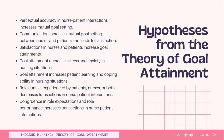Imogen King also created hypotheses from her theory: perceptual accuracy in nurse-patient interactions increases mutual goal setting. Communication increases mutual goal setting between nurses and patients and leads to satisfaction. Satisfaction in nurses and patients increases goal attainment. Goal attainment decreases stress and anxiety in nursing situations. Goal attainment increases patient learning and coping ability in nursing situations. Role conflict experienced by patients, nurses, or both decreases transactions in nurse-patient interactions. Congruence in role expectations and role performance increases transactions in nurse-patient interactions.